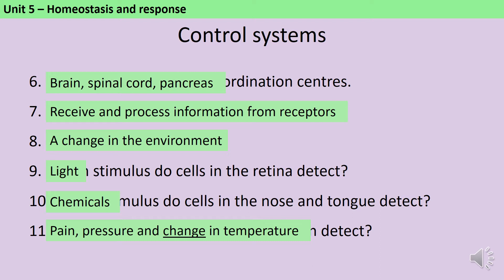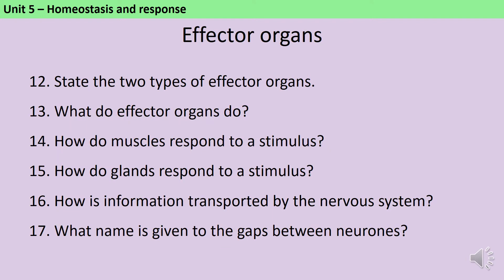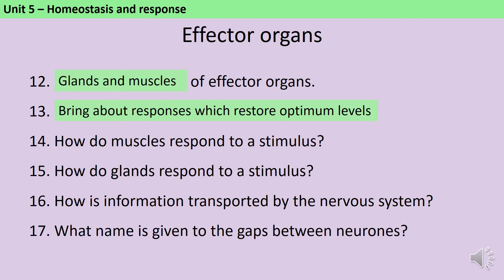This is why if you put one hand in hot water and one hand in cold water and then put them both into the same bucket of warm water, the hand that was hot will feel cold and the hand that was cold will feel hot, even though they're in the same temperature. Effector organs can be either glands or muscles, and they're responsible for bringing about responses which restore the optimum levels of those conditions. When a muscle is responding to a stimulus it contracts, and when a gland is responding to a stimulus it secretes a hormone.